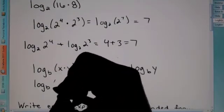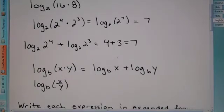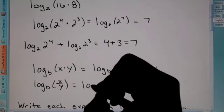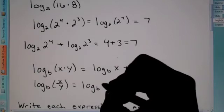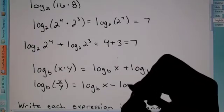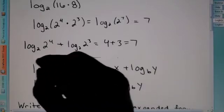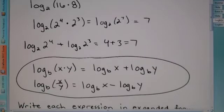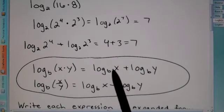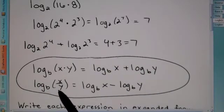If I give you log base b of x over y, you can say this is log base b of x minus log base b of y. So, these are the two identities that we're going to be dealing with. Again, if they're being multiplied on the inside, we could separate them, say log plus log. Here, if it's being divided on the inside, we can say log minus log.